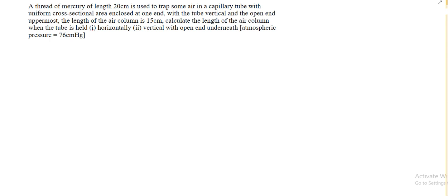Hi guys, welcome back to The Physics Solution. Today we are solving an interesting question. A thread of mercury of length 20cm is used to trap some air in a capillary tube with uniform cross-sectional area enclosed at one end. With the tube vertical and the open end uppermost, the length of the air column is 15cm. Calculate the length of the air column when the tube is held horizontally. Take atmospheric pressure to be 76cm of mercury.